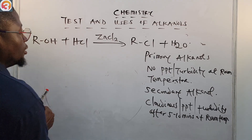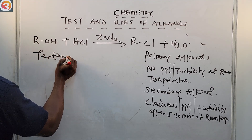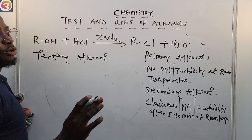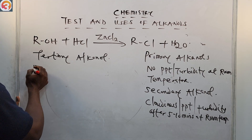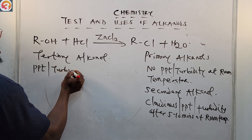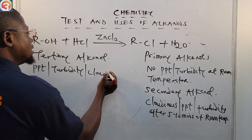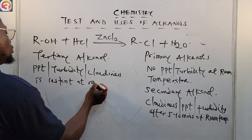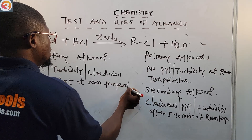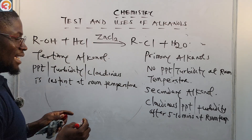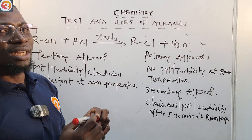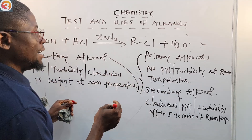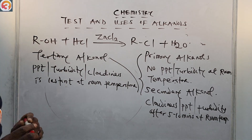For tertiary alkanols, the precipitate, turbidity, and cloudiness are immediate — it is instant at room temperature. So the Lucas test, using Lucas reagent (anhydrous zinc chloride with concentrated hydrochloric acid), is used to distinguish between primary, secondary, and tertiary alkanols.